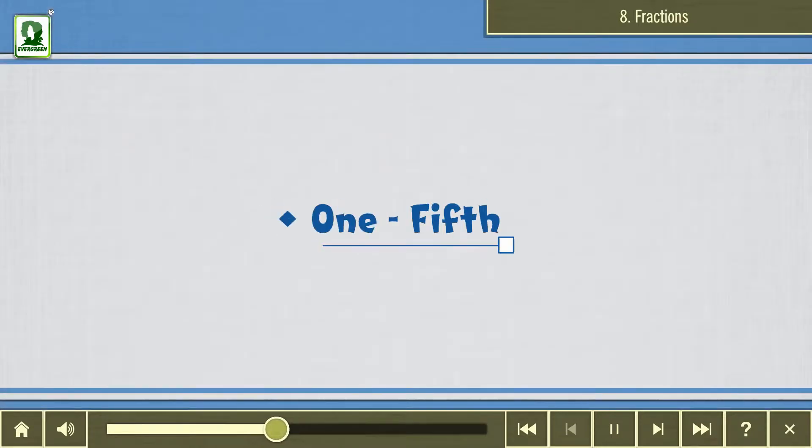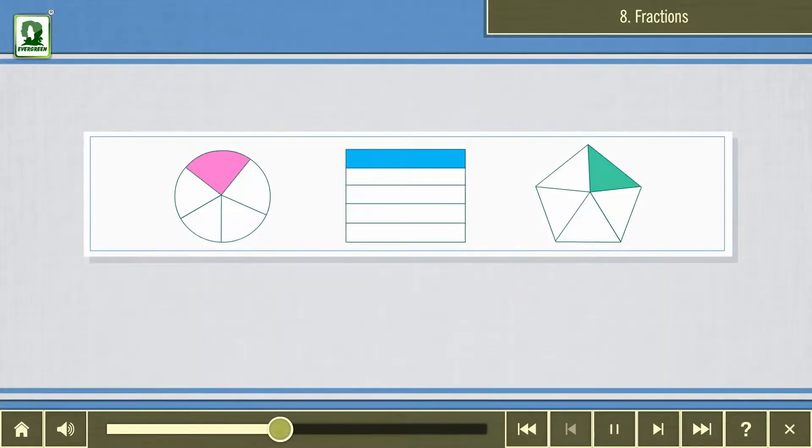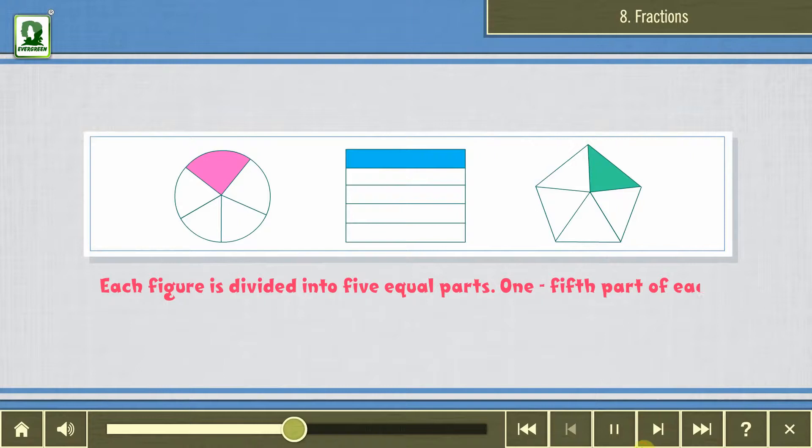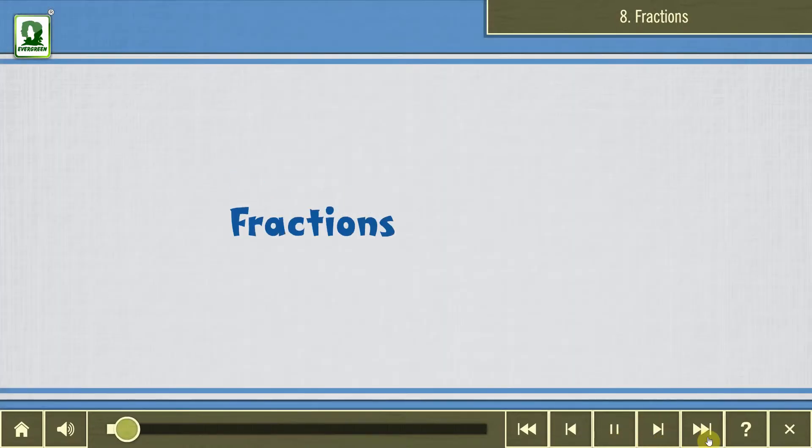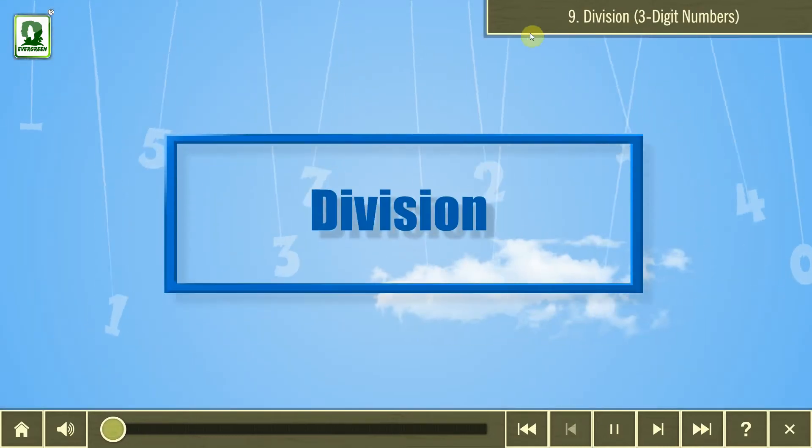One fifth. Each figure is divided into five equal parts. One fifth part of each figure is colored.